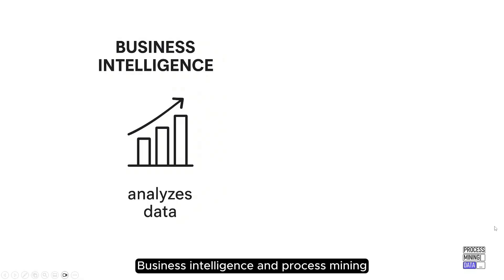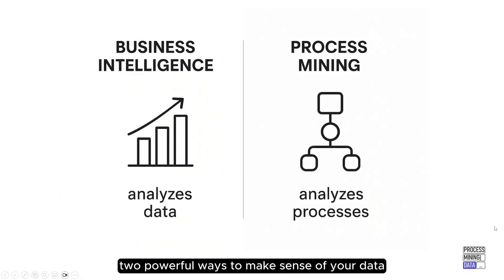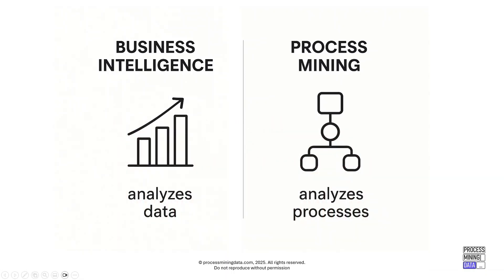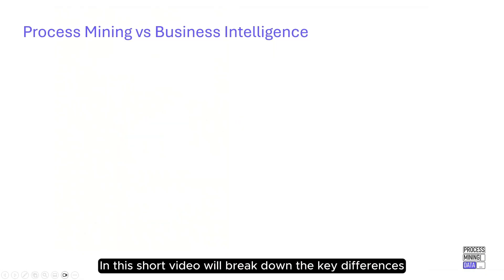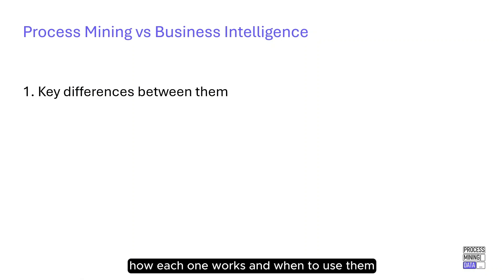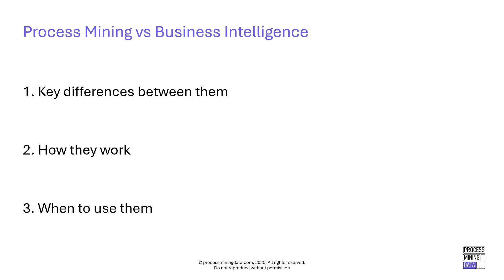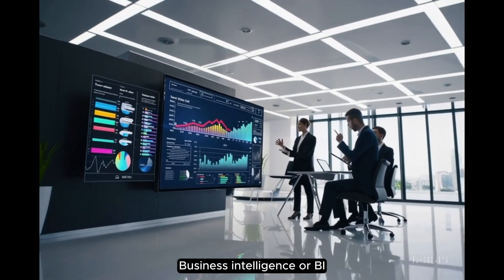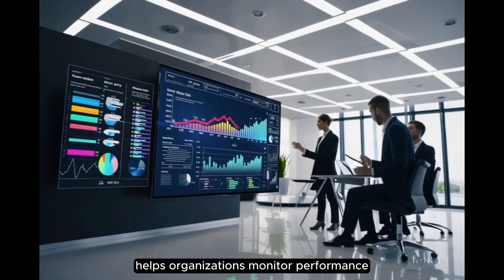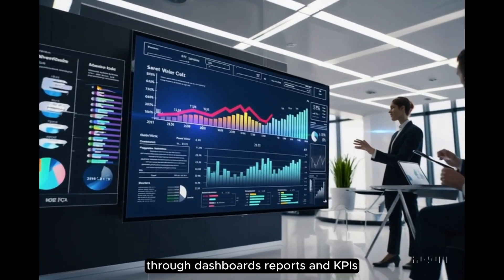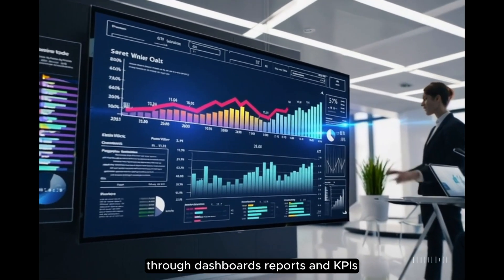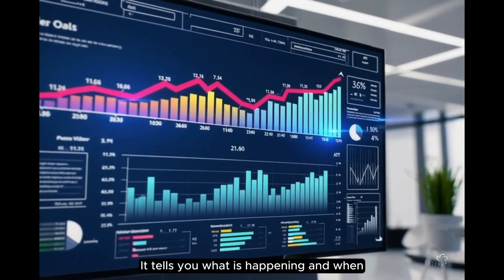Business intelligence and process mining — two powerful ways to make sense of your data. But what exactly sets them apart? In this short video, we'll break down the key differences, how each one works, and when to use them. Business intelligence, or BI, helps organizations monitor performance through dashboards, reports, and KPIs. It tells you what is happening.